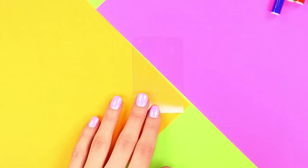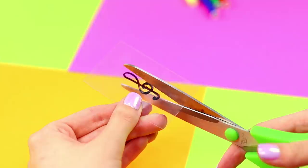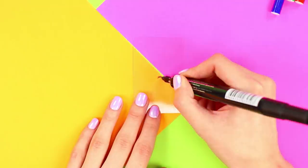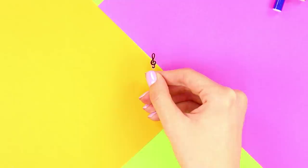Draw a treble clef with a marker on a small piece of plastic. Cut it out. Put the plastic in a preheated oven. The high temperatures make the plastic harden and decrease in size. Take the ink container from a ballpoint pen. Trim it. Paste the treble clef into it.